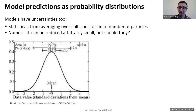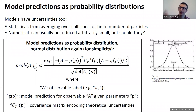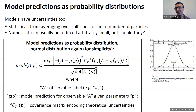What you end up doing is considering your model prediction as a probability distribution, written as a Gaussian. Here, g is the prediction of an observable in your model given the parameter set — which can be viscosities, initial condition parameters, etc. — and this is the output of your model. You have a covariance matrix encoding the uncertainty. For a single observable, the inverse covariance is simply one over sigma squared, where sigma is the standard deviation of your distribution.